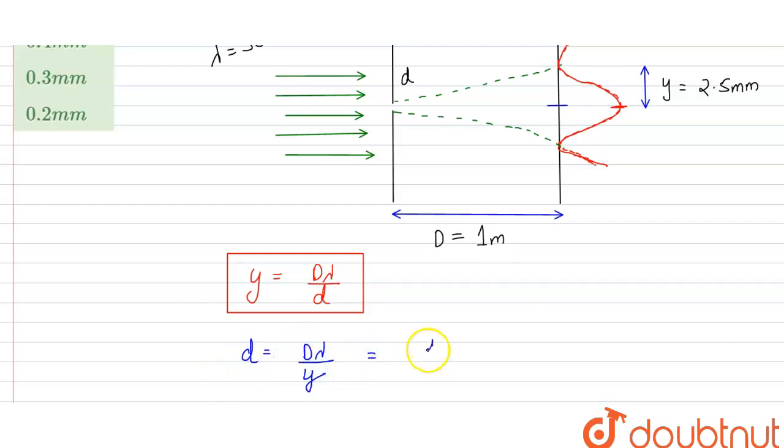D has the value of 1 meter, lambda has the value of 500 nanometers, so 5×10⁻⁷ meters, divided by y, which has the value of 2.5 mm, so 2.5×10⁻³ meters.